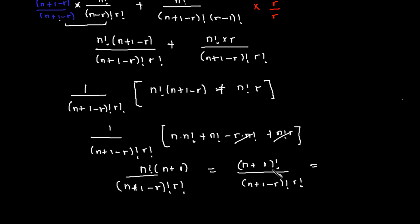So we are left with n plus one factorial divided by n plus one minus r factorial times r factorial, and this is exactly n plus one combination r.